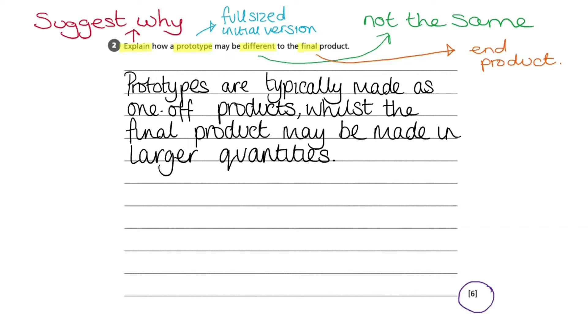So I'm going to start with the sentence that prototypes are typically made as one-off products, whilst the final product may be made in larger quantities. This is so that, as we have already said, then the designers or manufacturers can test the product and gain feedback on the product.